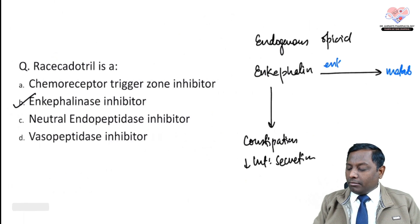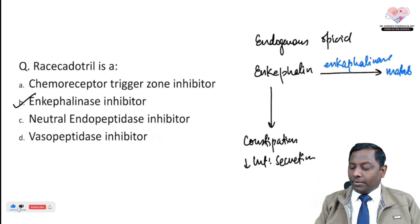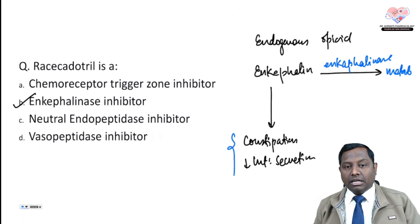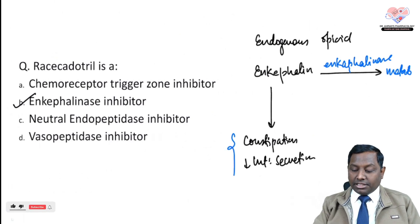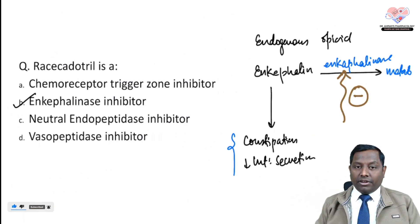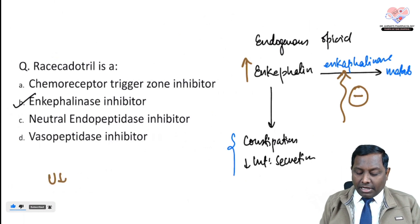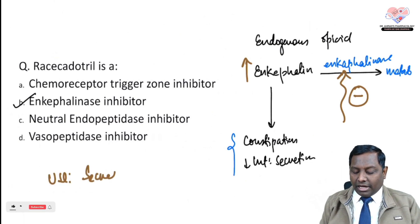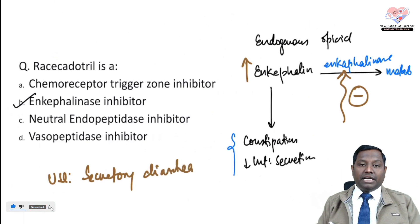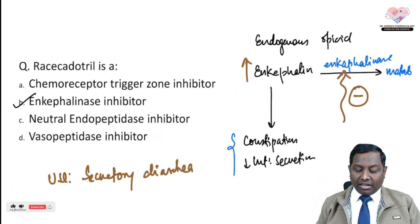If you inhibit enkephalinase, the level of enkephalin increases, which decreases intestinal motility and secretion. Racecadotril is therefore used in secretory diarrhea. It is also very safe in pediatric and elderly populations — making it a highly safe drug overall. Racecadotril is the enkephalinase inhibitor.